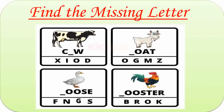First one is Cow. Missing letter is O. C-O-W. Cow. Second one is Goat. Missing letter is G. G-O-A-T. Goat. Third one is Goose. Missing letter is G. G-O-O-S-E. Goose. Fourth one is Rooster. The missing letter is R. R-O-O-S-T-E-R. Rooster.